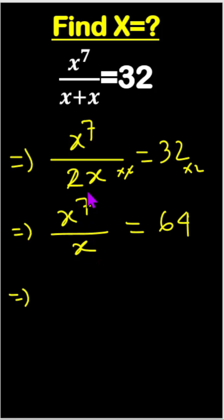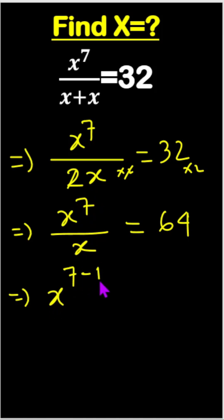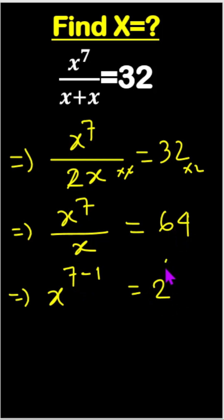Once the bases are the same in division, the power will be subtraction. So x to the power 7 minus 1 equals 64, which gives us x to the power 6. This 64 we can write as 2 to the power 6.